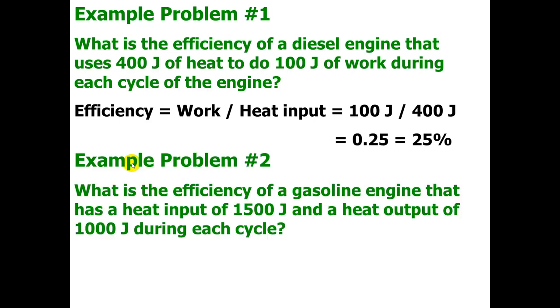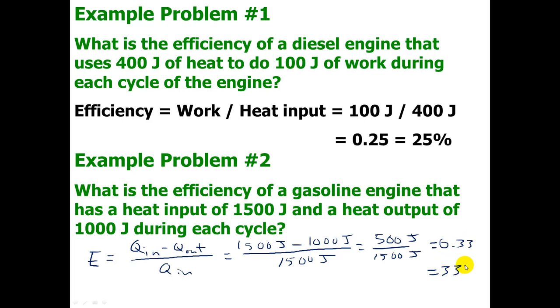Let's take a look at example problem number 2. So pause it, read it to yourself, and then work through the problem, and then press play to see the solution. So we have efficiency equals Q_in minus Q_out over Q_in. Q_in is 1,500 joules minus Q_out, which is 1,000 joules, over 1,500 joules. We get 500 on top over 1,500 on the bottom. 500 over 1,500 is 0.33 or 33%.